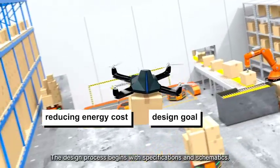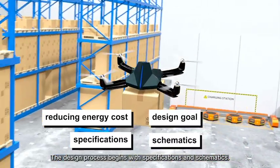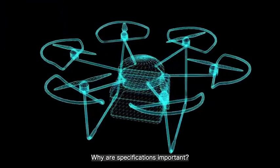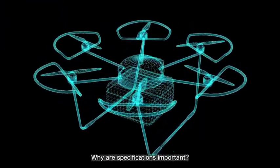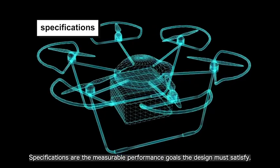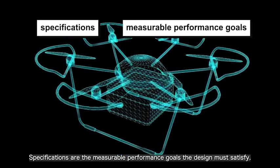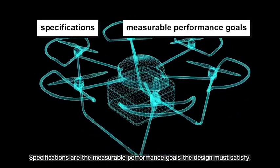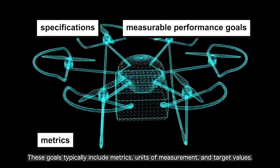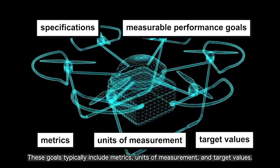The design process begins with specifications and schematics. Why are specifications important? Specifications are the measurable performance goals the design must satisfy. These goals typically include metrics, units of measurement, and target values.